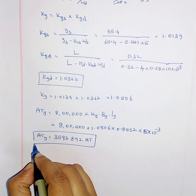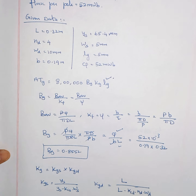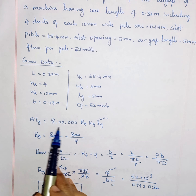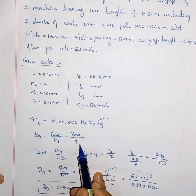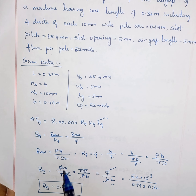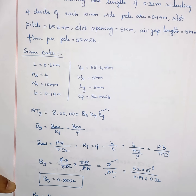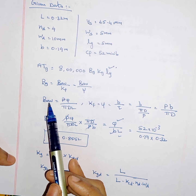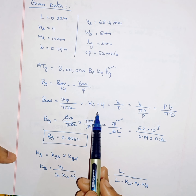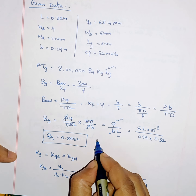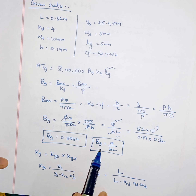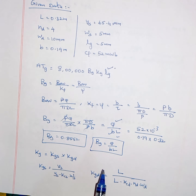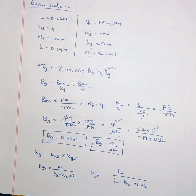So the formula is the same — 8 lakh times BG times KG times LG — but here BAV and psi are not given directly. They have given the flux value, pole arc, and core length, so we substitute the formulas for BAV and KF, simplify, and get BG as φ divided by B. Simply substituting this gives the same procedure as other problems. Thank you all.